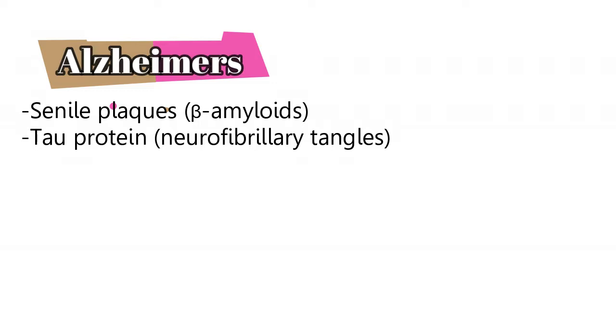Senile plaques, the beta amyloids, are a natural protein found in the brain. This protein is usually cleaved by certain enzymes and removed from the brain. When this enzyme is not working or when these proteins are produced in larger amounts, they will form together and form a big protein structure called beta amyloid.